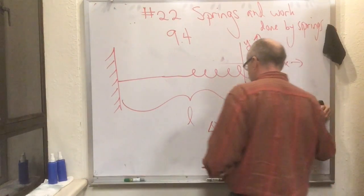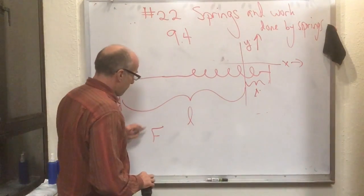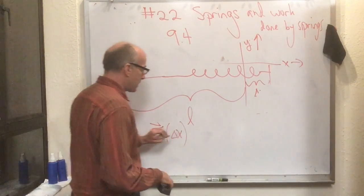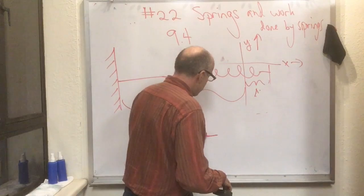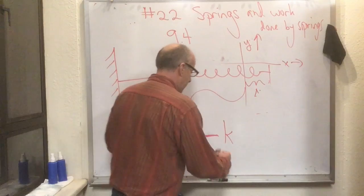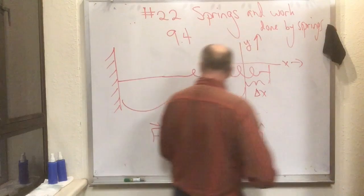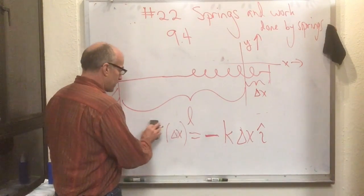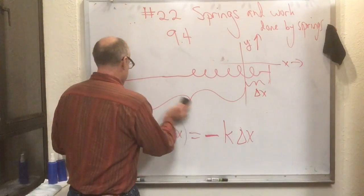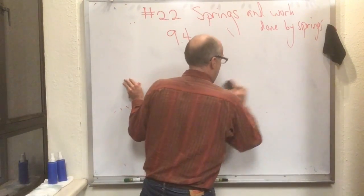We model the spring's force as a function of delta x, the amount it's displaced from its natural position, as minus some constant k times delta x times i-hat. A lot of times we just look at the x component, in which case we have Fx = -k·Δx.